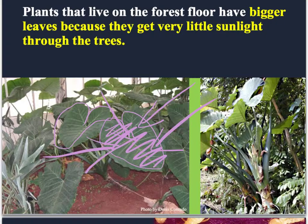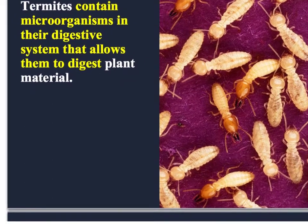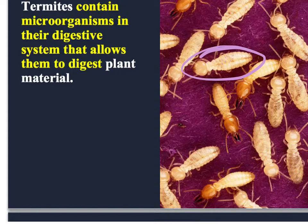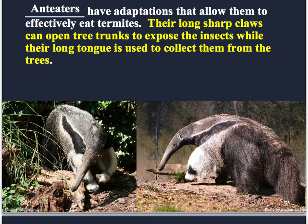These are termites, and they eat wood, which is really hard to digest. Inside their stomachs they have tiny bacteria that actually eat the wood for them — this is another example of an adaptation. Termites are closely related to ants, but you don't see ants eating the wooden things in your house. Having these microorganisms is an adaptation that allows termites to eat something their cousins the ants cannot, giving them an alternative food source.